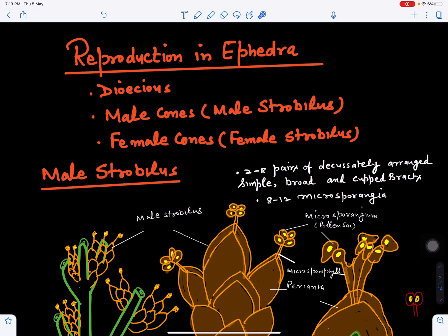In this video we will discuss the male strobilus of Ephedra, or male cones of Ephedra. Reproduction in Ephedra occurs by means of male and female strobili. They are borne on different plants, so the condition is called dioecious.